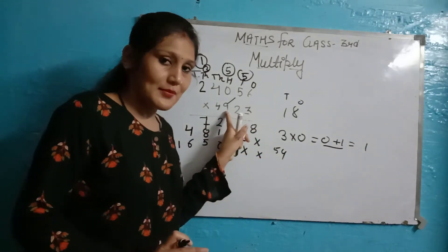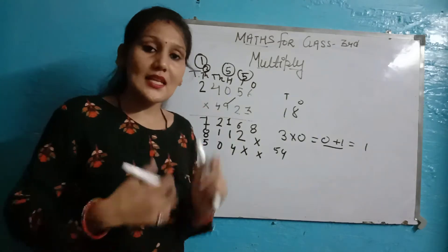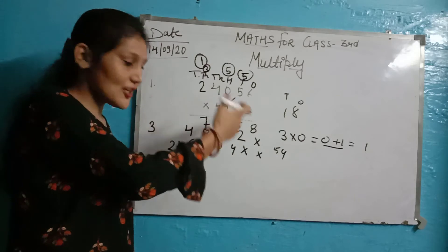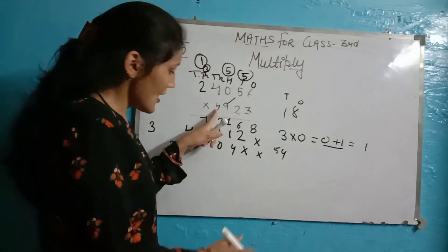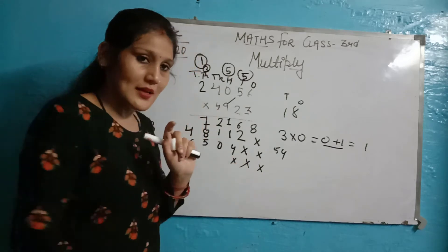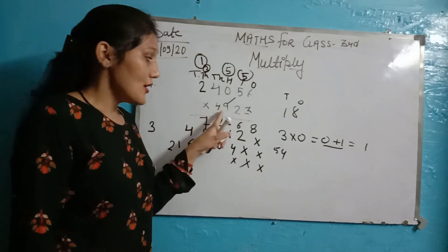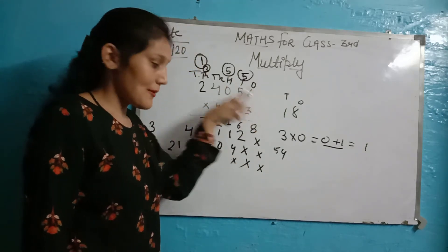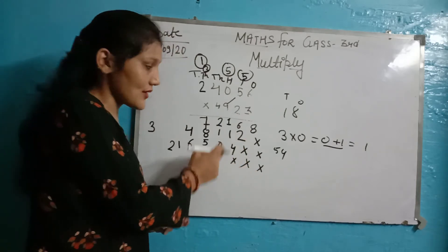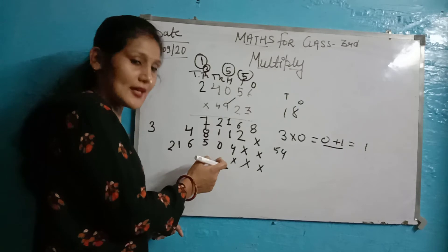If you have desserts, we will do it. Now, this is finished. Tens is also done, hundreds place is done. We have come to the thousands place. We will multiply the thousands place and write it in the thousands place.